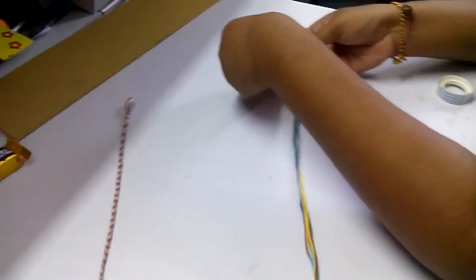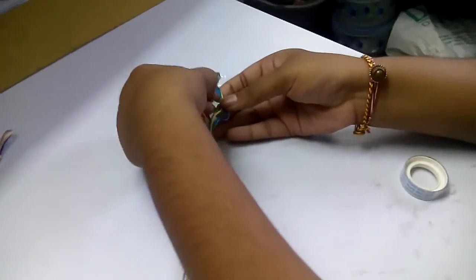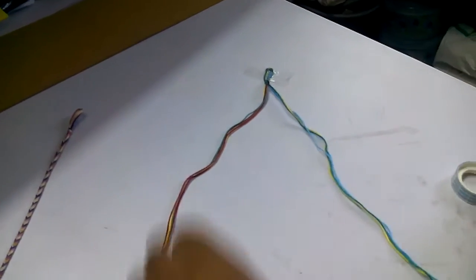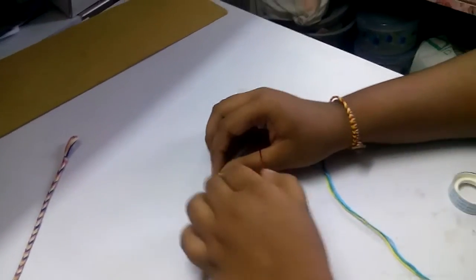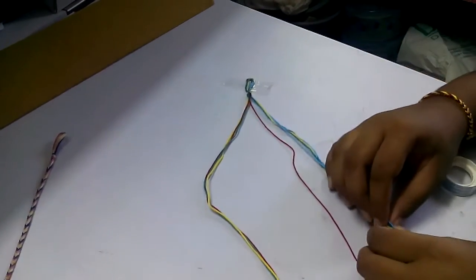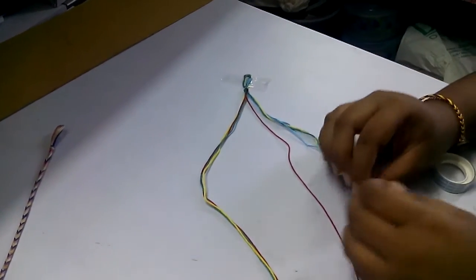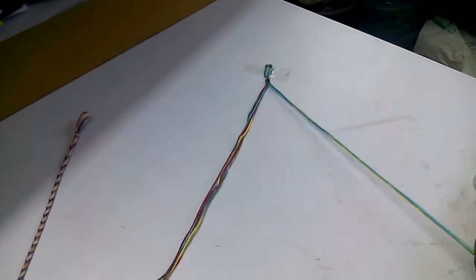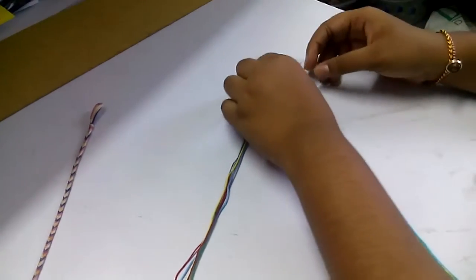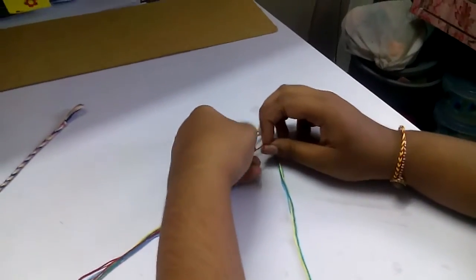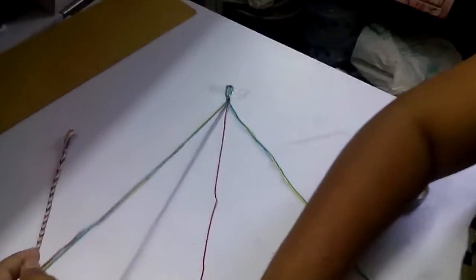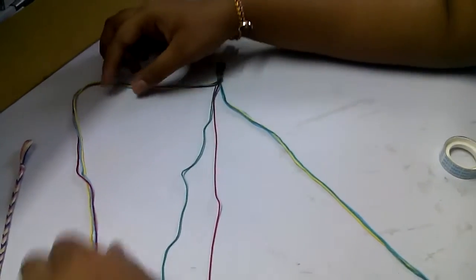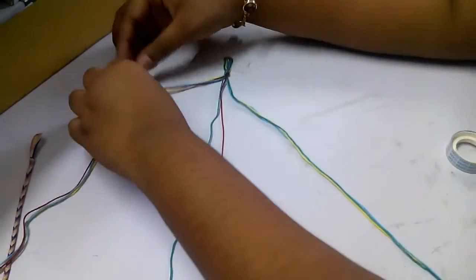Now separate the colors one by one and ensure each color comes on both sides. In this way, you can start your anklet in the fishtail system. Arrange the threads in proper order so the amounts are even.